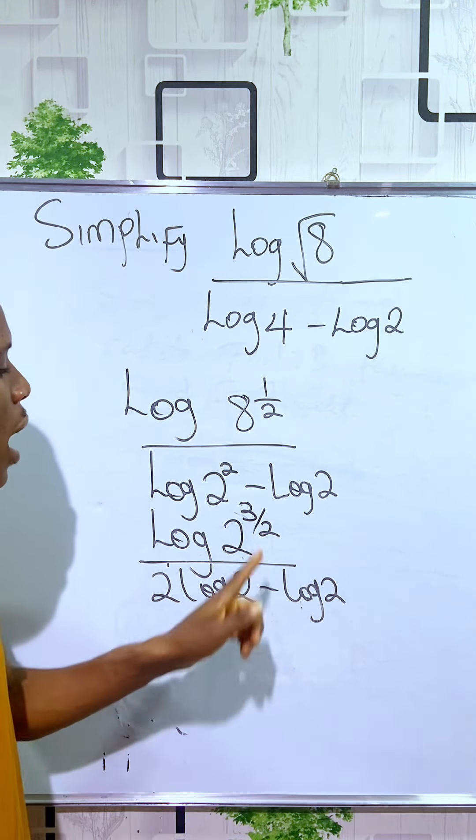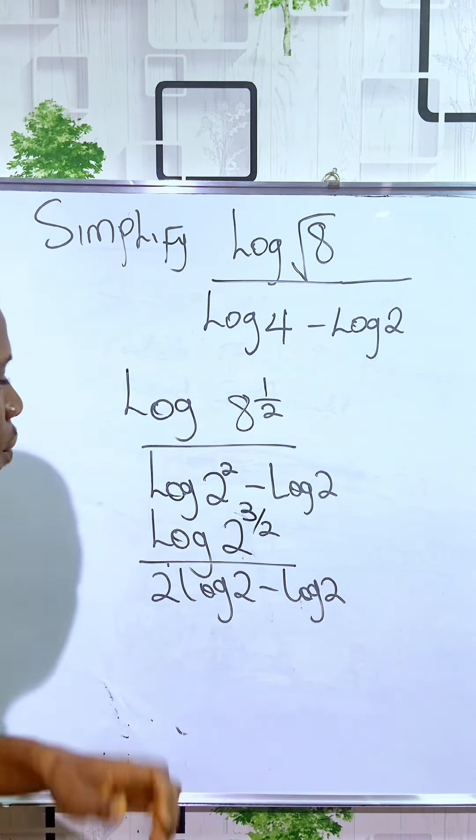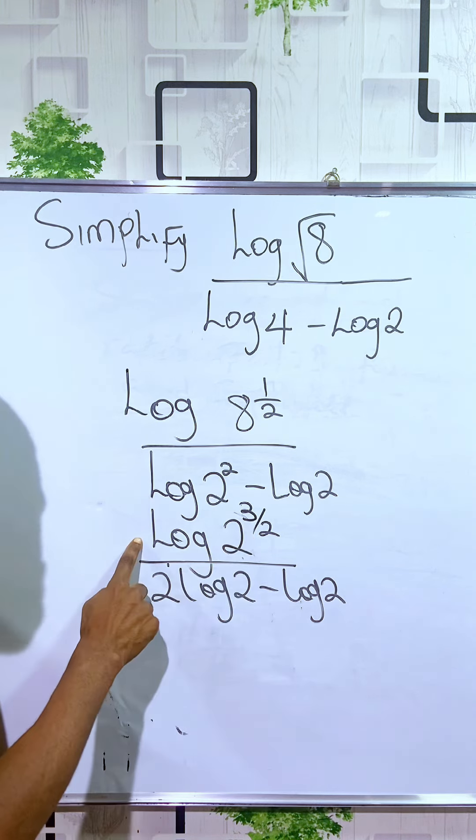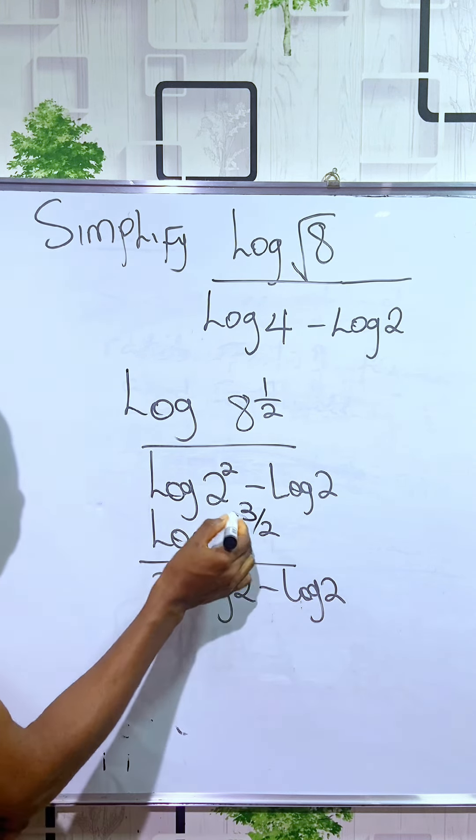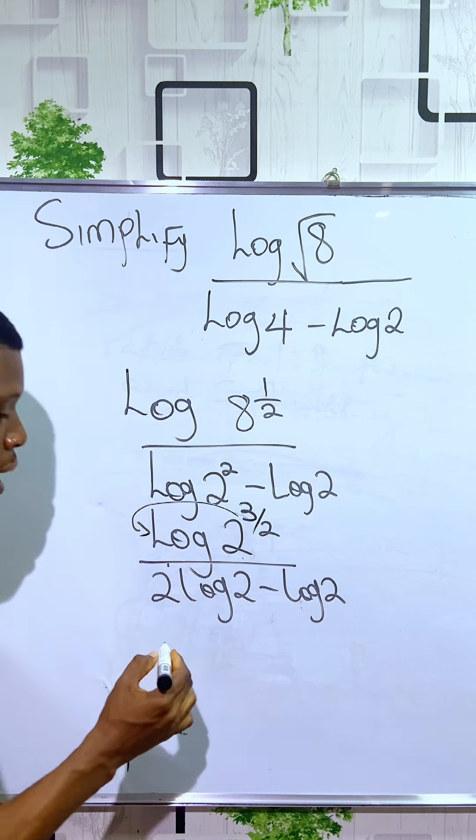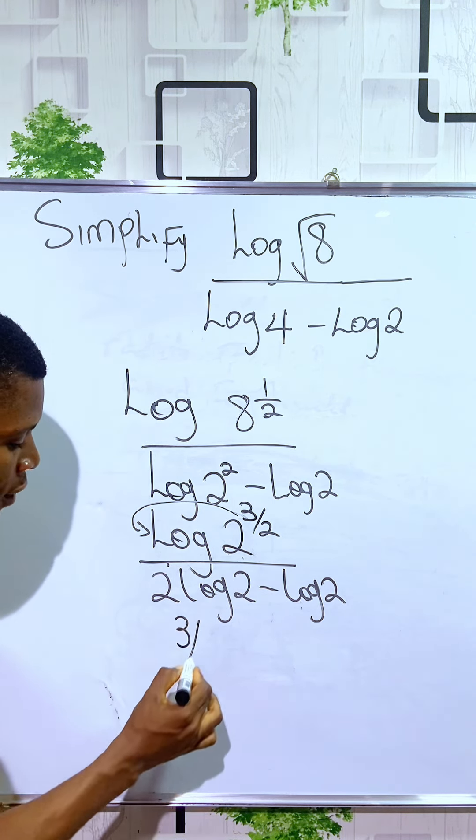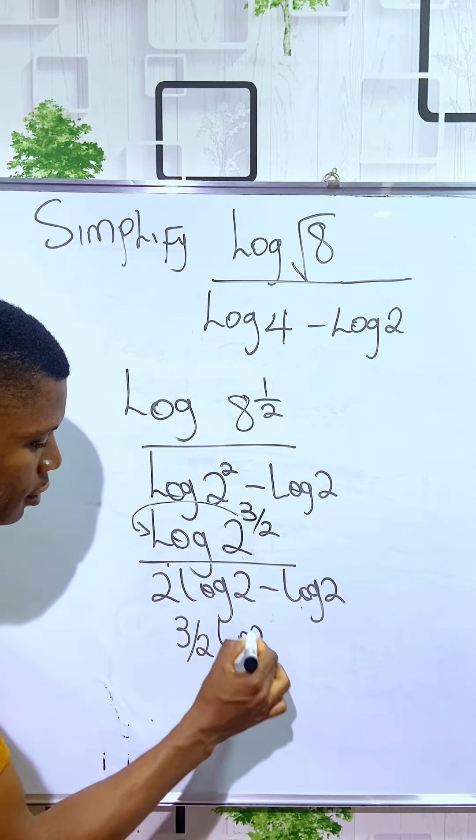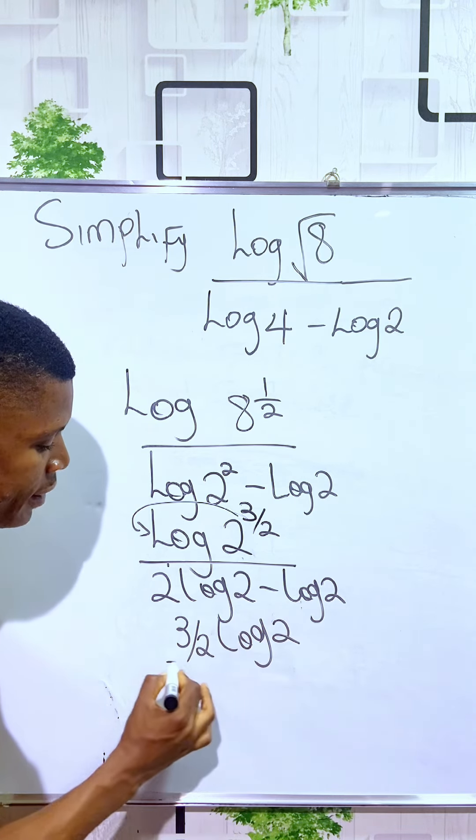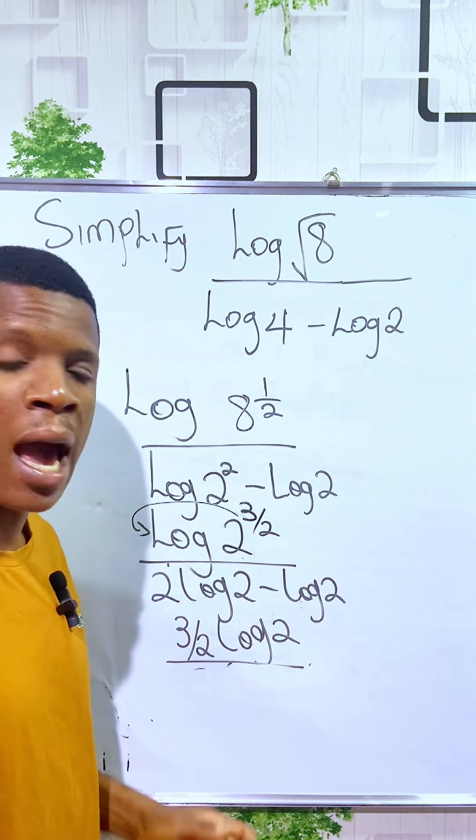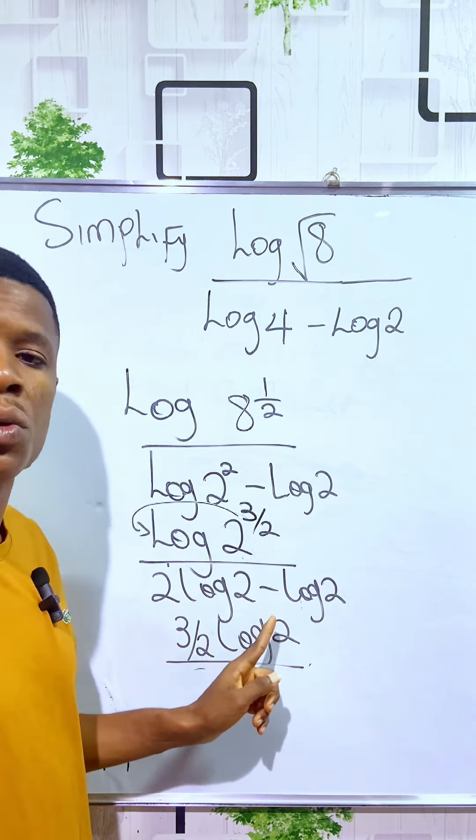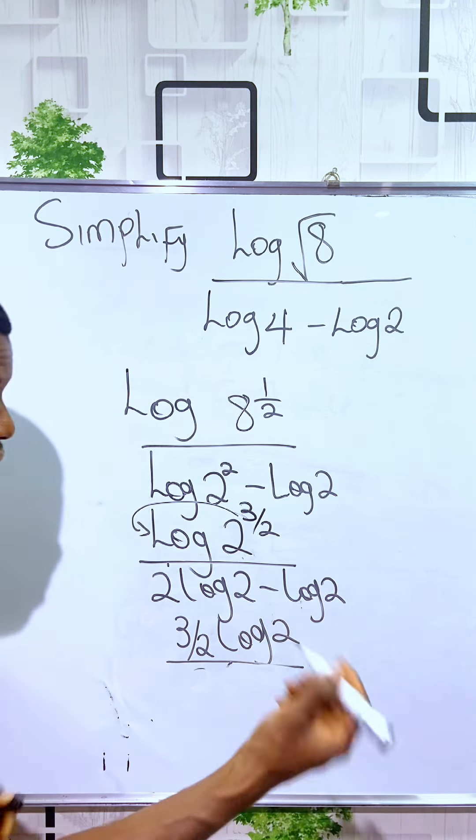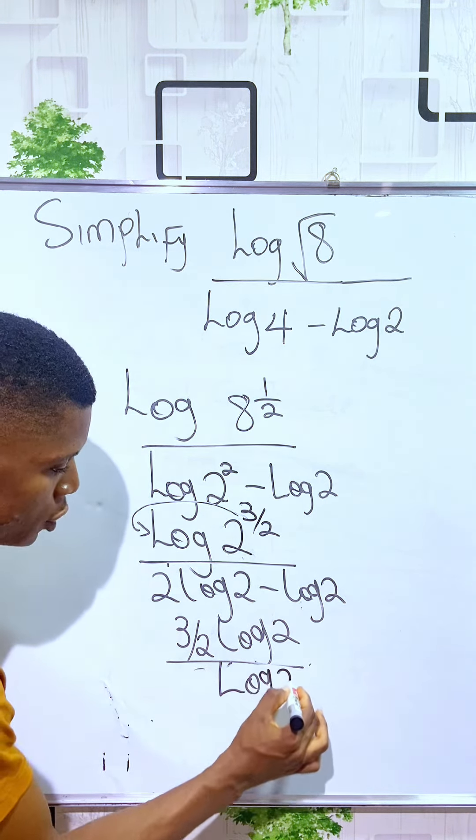So we have to do the same thing to the first one. We have to multiply this log by 3 over 2. That's it from the theories of logarithms. You have it that 3 over 2 log 2 divided by, here we have 2 log 2 minus log 2 is the same thing as log 2.